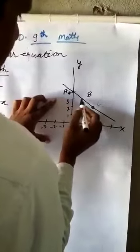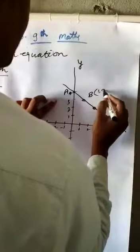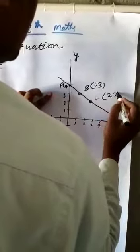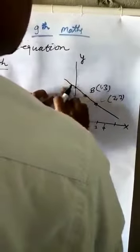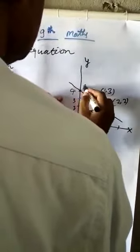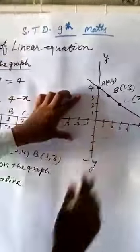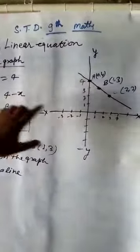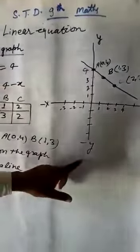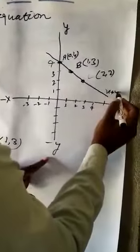This is a straight line. B 1 comma 3, C 2 comma 2, A 0 comma 4. This is 3 points. This is graph of x plus y equal to 4. x plus y equal to 4. This is graph.